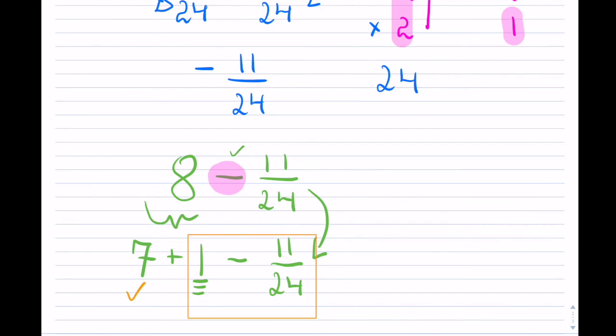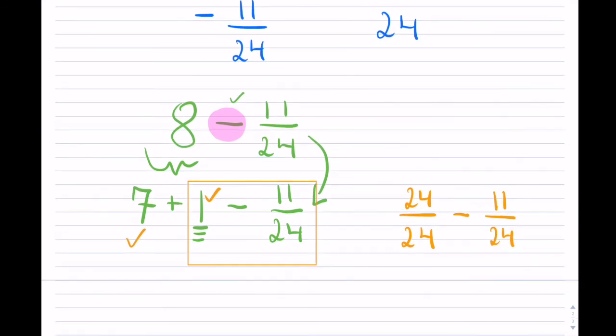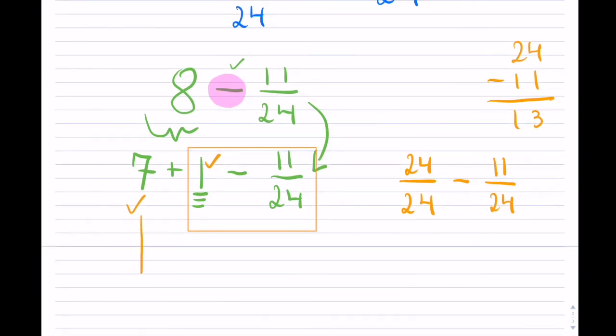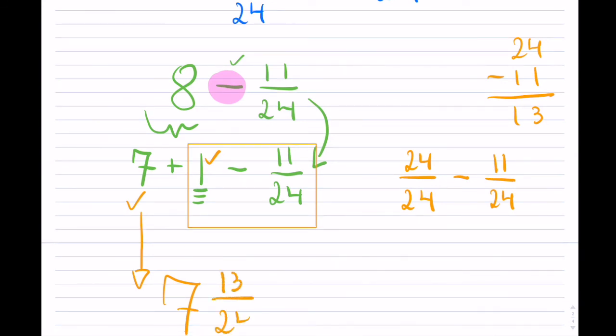So I do not touch the 7. But I can subtract. And I have 1 minus 11 over 24. And just like the first example and the second example, so 1, I can make a common denominator. So 1 is 24 over 24 minus 11 over 24. So now subtracting these two, 24 minus 11, and that gives me 13. So my final answer is 7 and 13 over 24.